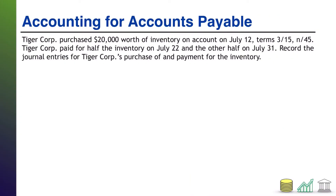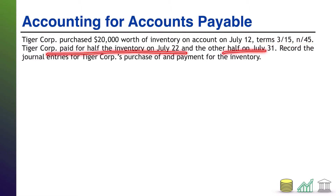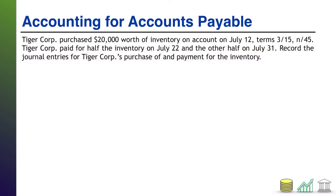One problem. Tiger Corps purchased $20,000 worth of inventory on account on July 12th, and there are some payment terms. Tiger Corps paid for half the inventory on July 22nd and the other half on July 31st. Assume this is a perpetual inventory system where you always update the inventory balance when needed.